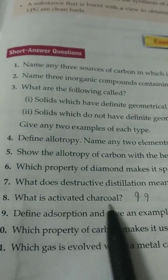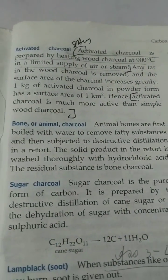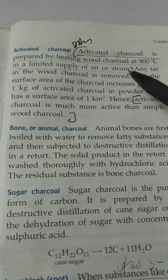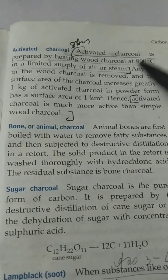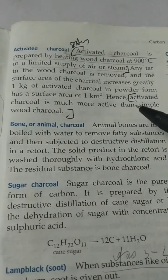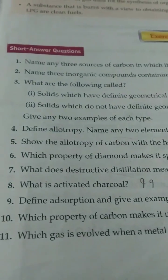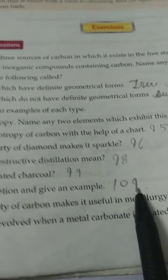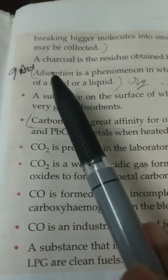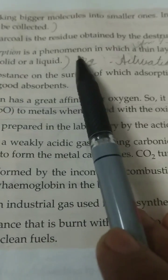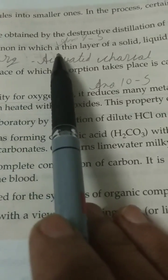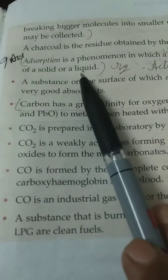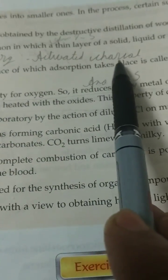Eighth, what is activated charcoal? See page number 99. Activated charcoal is prepared by heating wood charcoal at 900 degrees Celsius in a limited supply of air or steam. Activated charcoal is much more active than simple wood charcoal. Ninth, define adsorption and give an example. See page number 109, same page, second point. Adsorption is a phenomenon in which a thin layer of solid, liquid or gas is formed on the surface of a solid or liquid. Example: activated charcoal.